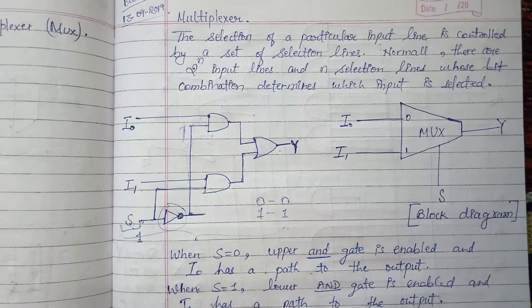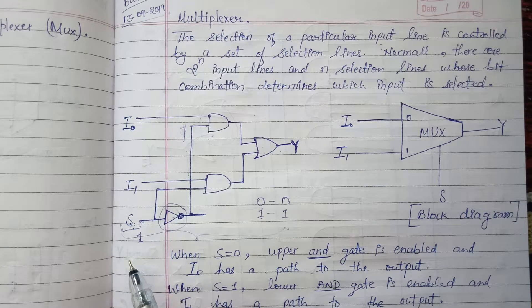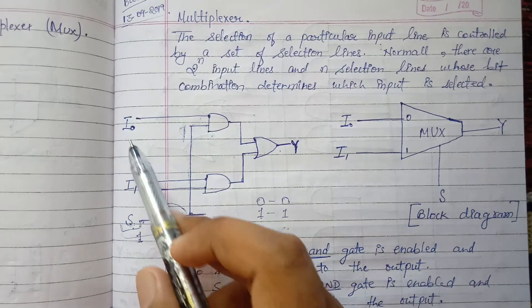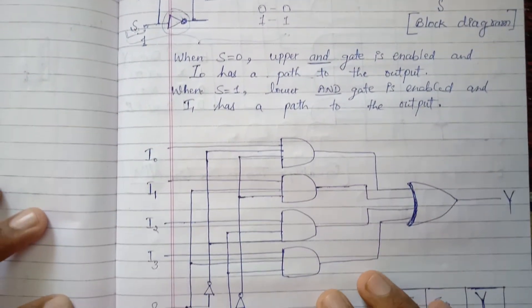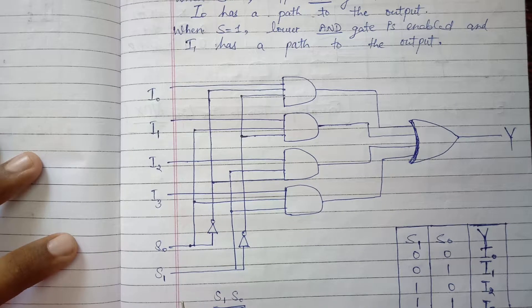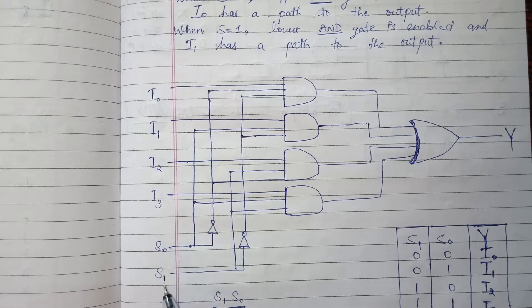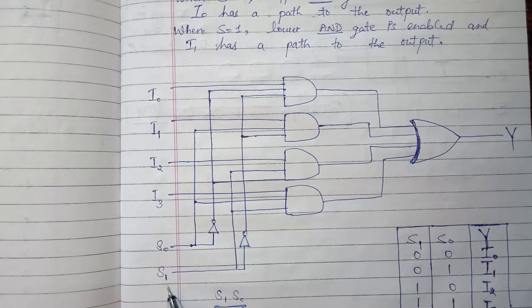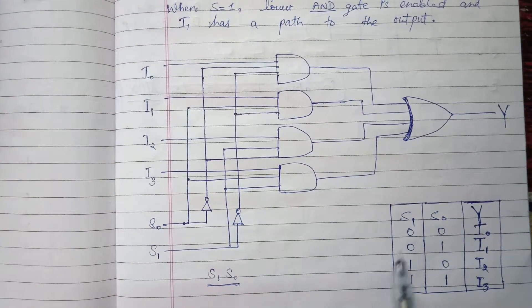We take the bit combination of the select inputs, convert it to its binary value, and that binary value will be the minterm value corresponding to the input subscript. For example, with two select inputs S0 and S1, we give four inputs I0, I1, I2, I3, and the two select inputs decide which of these four inputs will be the output.